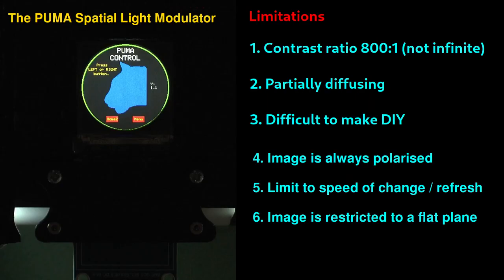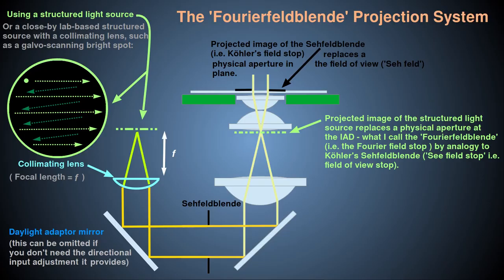The Puma TFT SLM can also allow versatile control of this Fourier aperture, but it has several limitations that were described in the video on the SLM. For example, because the SLM uses a TFT screen, it cuts out a lot of the incident light due to its crossed polarizers, and it always transmits plane polarized light, whereas a light source in this external system using the daylight Köhler adapter will have minimal losses in intensity and does not need to be polarized.